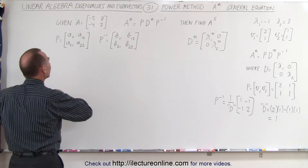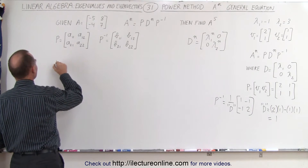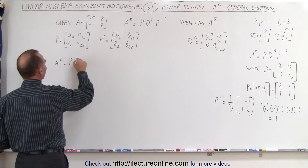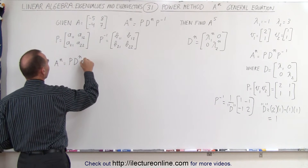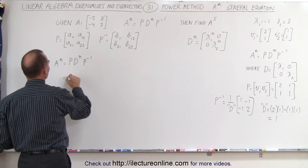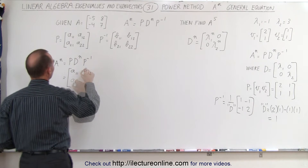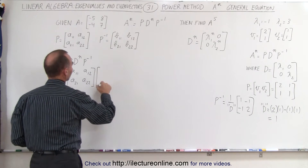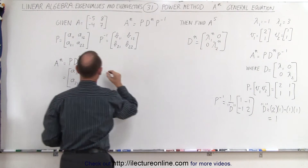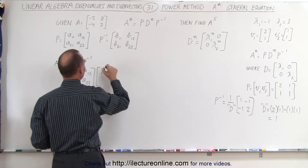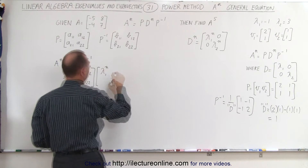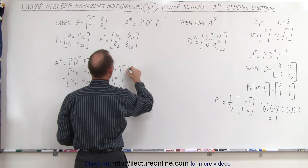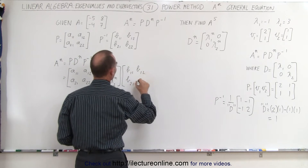So let's go ahead and do this and see what it looks like. A to the n is equal to the P matrix times the diagonalized matrix to the n power times the inverse of the P matrix, which is equal to A11, A21, A12, A22 multiplied times the diagonalization matrix to the n power — that's eigenvalue 1 to the n power on the diagonal, zeros everywhere else — and then the inverse of the P matrix, using generalized numbers.